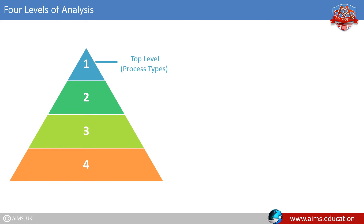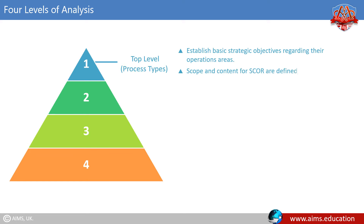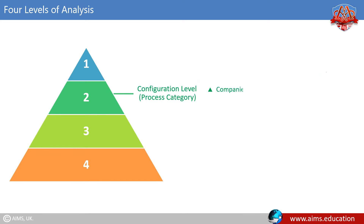At level one, companies establish basic strategic objectives regarding their operations areas. The scope and content for SCOR are defined, and the basis of competition and performance targets are set. At level two, companies configure their supply chains and implement their operations strategy through that configuration.